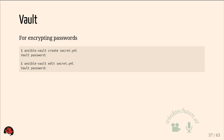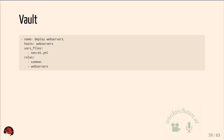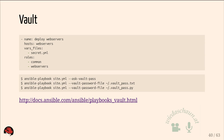Ansible also provides a Vault service for encrypting passwords, so you don't need to specify passwords in plain text in your playbooks. You can create an encrypted file which you then include in the playbook. When running the playbook, you specify that Ansible should ask for the password, or read it from a text file or a script.